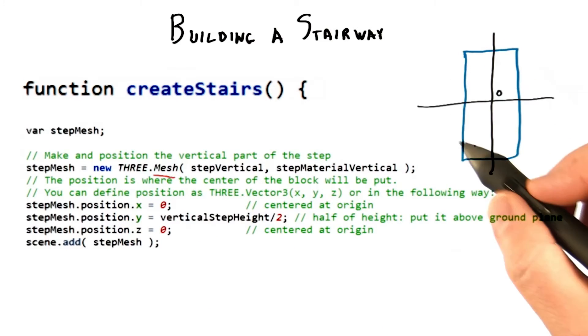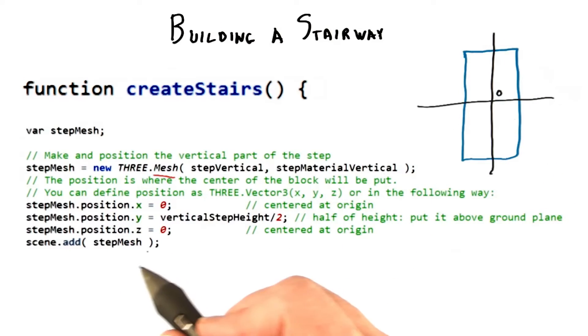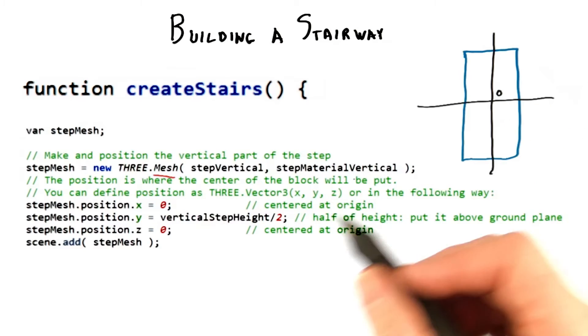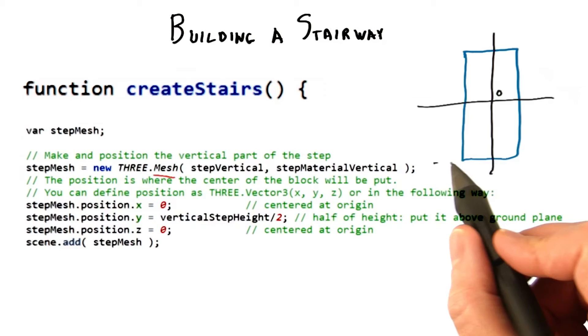When you create a box, it is centered around the origin. For our vertical part of the step, we want this piece to be resting on the ground. To do so, we take half of the height of the piece and move it this distance upward, so that the bottom is now at ground level.